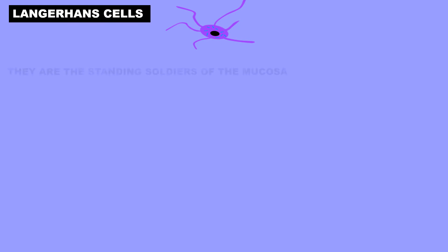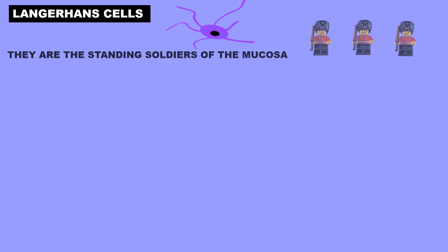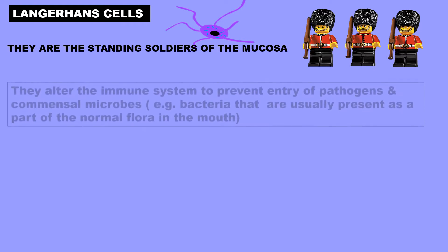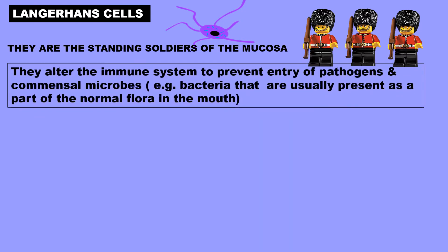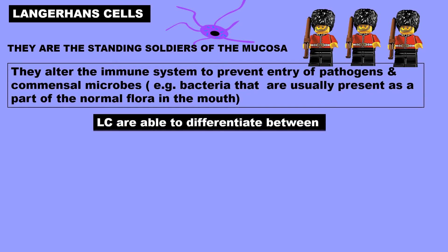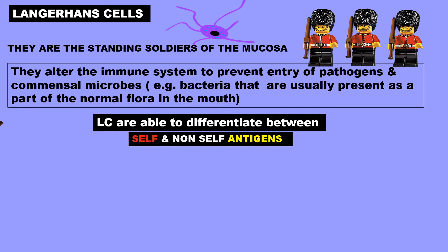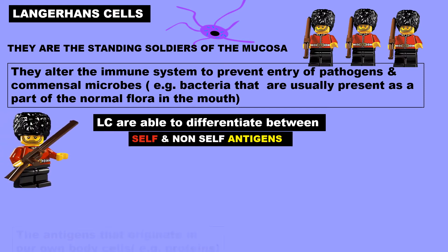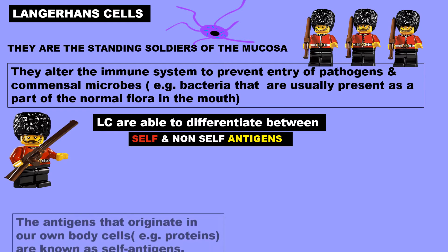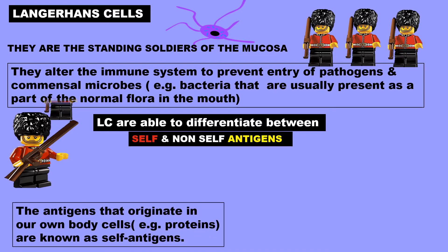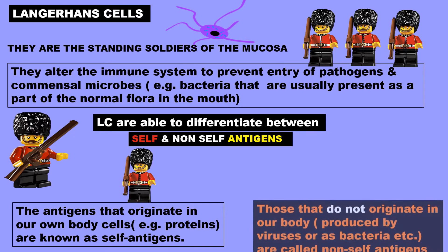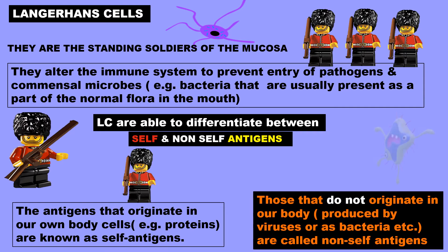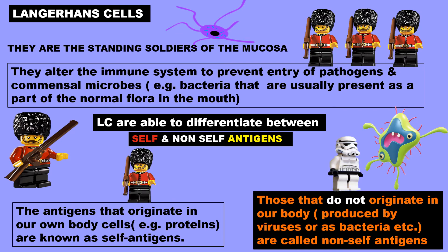Langerhans cells are the standing soldiers of the mucosa. They alert the immune system to prevent entry of pathogens and commensal microbes, e.g. bacteria that are usually present as part of the normal flora of the mouth. Langerhans cells are able to differentiate between self and non-self antigens. The antigens that originate in our own body cells, e.g. proteins, are known as self-antigens. Those that do not originate in our body but are produced by viruses or bacteria etc. are called non-self antigens.